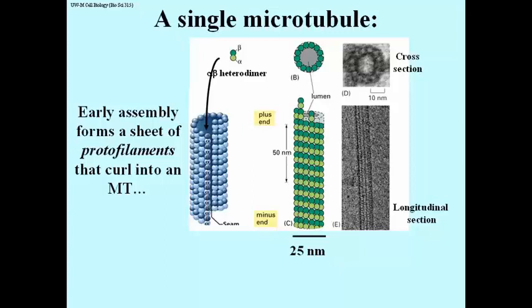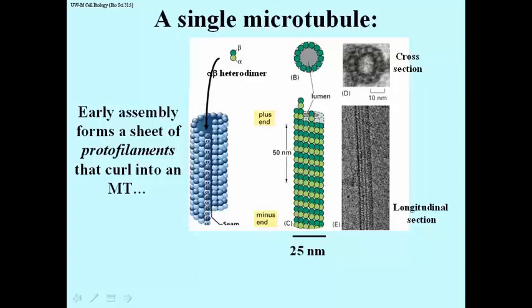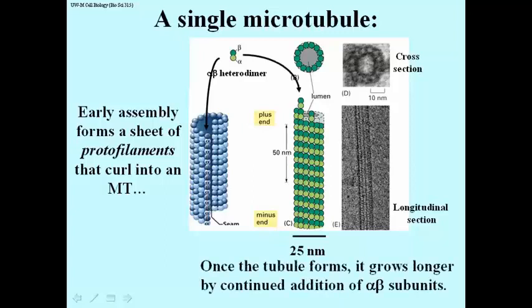The alpha-beta heterodimers that aggregate to form the protofilament continue to add to a fully formed microtubule, adding to the plus end to grow it. If you look in cross-section — shown in cartoon item B and also as electron micrograph item D — you can count 13 tubulin subunits. All microtubules in eukaryotes are a ring of 13 tubulin subunits, and in longitudinal section the microtubule is 25 nanometers in diameter.